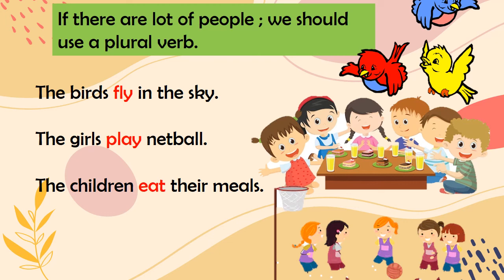Now let's see plural nouns or subjects. For plural subjects, the verb does not have 'S' at the end. For example: 'The birds fly in the sky.' Birds is a plural noun, so we do not add 'S.' Next: 'The girls play netball.' Girls is plural, so we keep the verb without 'S.' Next: 'The children eat their meals.' Children is a plural noun, so we use the verb without the letter 'S.'